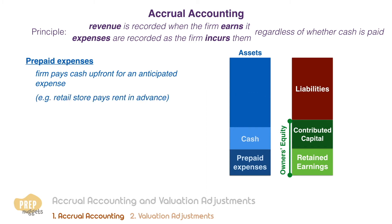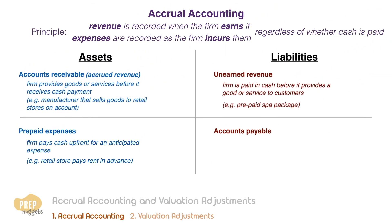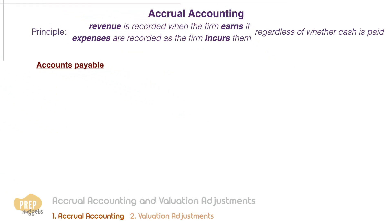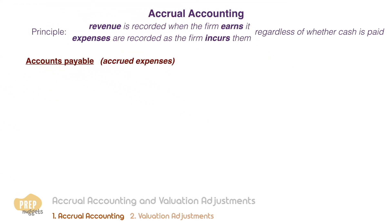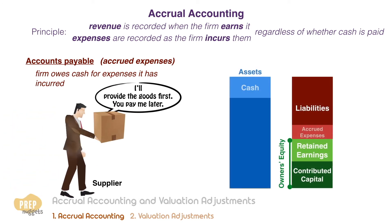For example, a retail store that rents space in a shopping mall will often pay its rent in advance. The advanced rent payment should be recorded as a prepaid expense until it has been consumed. Accounts payable belongs to the category of accrued expenses. This account is updated when the firm owes cash for expenses it has incurred.